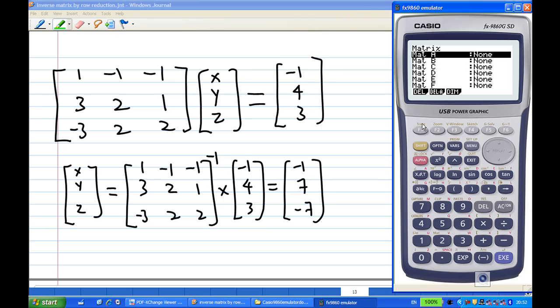I want to enter the matrix A now. So press execute. A is three rows and three columns. Then I enter the matrix A, 1, minus 1, minus 1, 3, 2, 1, and minus 3, 2, 2. So I finish and enter matrix A. Press exe now.